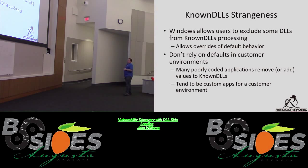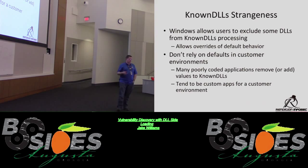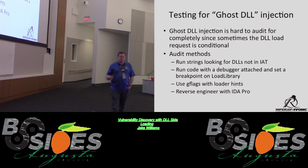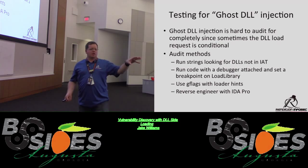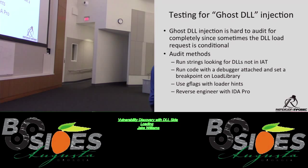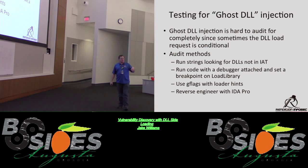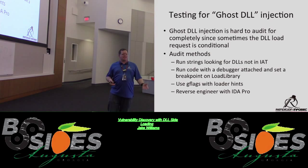Windows allows users to exclude DLLs from known DLLs processing and override default behavior — you don't want to rely on these defaults in customer environments. For testing ghost DLL injection, one thing we can do is look at the import address table for executables, run strings against them looking for references to other DLLs — not 100% since malware obfuscates, but a good start. We can also run the code with a debugger attached and set a breakpoint on LoadLibrary.